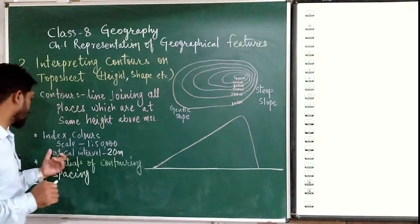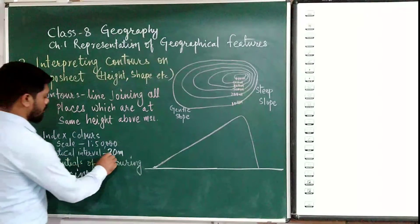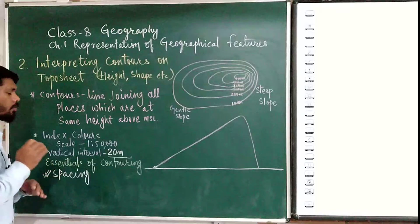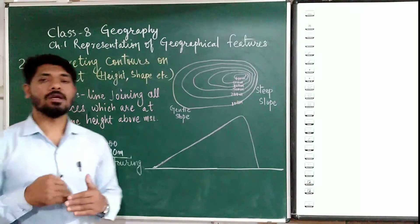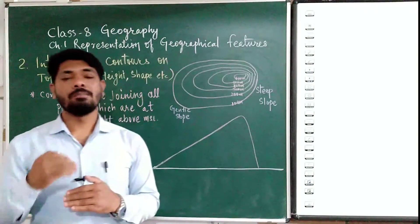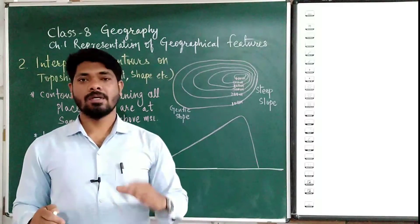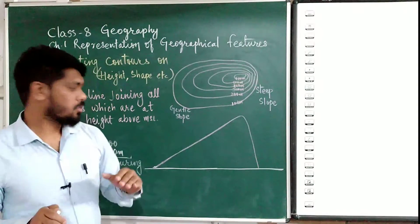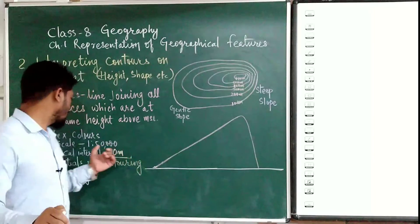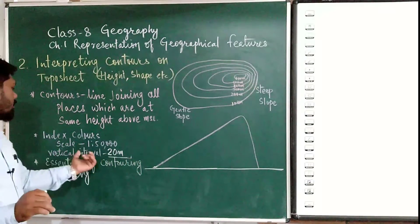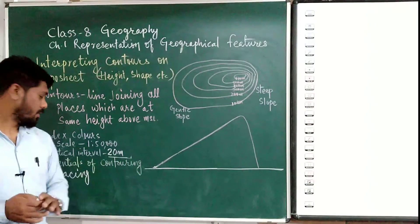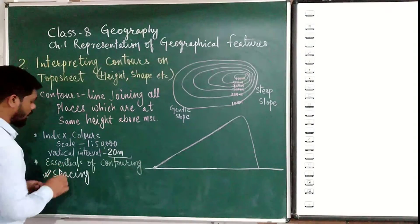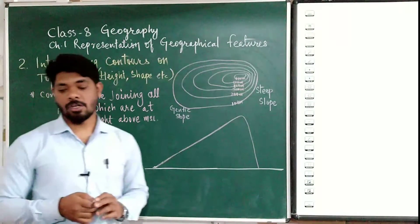Contour lines are drawn with an interval of twenty meters. That means after every twenty meters of height, one contour line is drawn. This is what we call the vertical interval, or contour interval. Let us now look at what the essentials of contouring are.